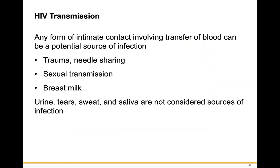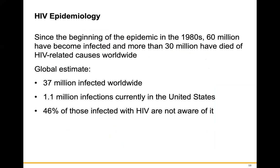HIV transmission: any form of intimate contact involving transfer of blood can be a source of infection, including trauma and needle sharing. Sexual transmission is the most common route in the US. Breast milk, urine, tears, sweat, and saliva are not considered sources of infection. Since the epidemic began in 1980, 60 million have been infected and more than 30 million have died of HIV-related causes. Currently, 37 million are infected worldwide, with 1.1 million infections in the United States, and 46% of those infected are unaware of their status.